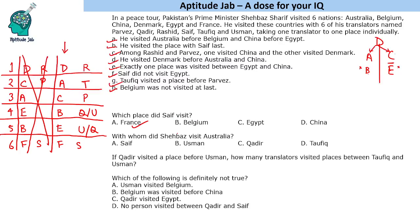Saif visited France. With whom did Saif visit Australia? He visited Australia with Taufic. If Qadir visited before Usman, Qadir comes first and Usman after. How many translators visited between Taufic and Usman? One, two — two people visited between them. Which of the following is definitely not true? Belgium was visited before China — but Belgium is after China, so that is definitely not true. Qadir could have visited Egypt, and Qadir and Saif could have visited consecutively. That is the solution to the set.